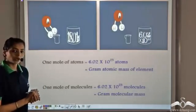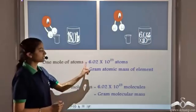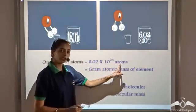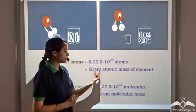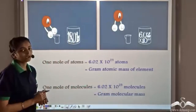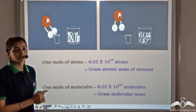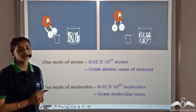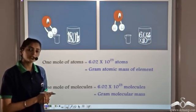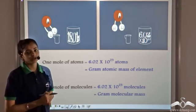To recap: 1 mole of atoms contains 6.02 x 10²³ atoms and its mass is equal to the gram atomic mass of the element. Similarly, 1 mole of molecules contains 6.02 x 10²³ molecules and its mass is equal to the gram molecular mass of the compound.